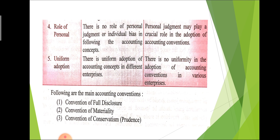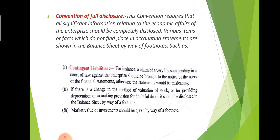There are mainly three types of accounting conventions: the first is the convention of full disclosure, the second is the convention of materiality, and the third is the convention of conservatism or prudence concept. According to the convention of full disclosure, we must show all significant information in the books of account at the time of recording the transaction. That necessary information recorded in books is called full disclosure.